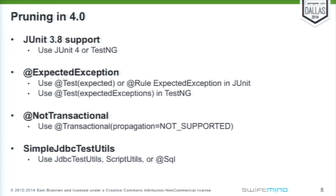Another annotation we had specific to tests was NotTransactional — kind of the opposite of what you normally use with transactional — and we got rid of that. The replacement, if you still need that feature in a test class that has transactional test methods, is to set the propagation level to NOT_SUPPORTED. That will mean this test method does not run in a transaction. SimpleJdbcTestUtils — if you find code using that, just switch to JdbcTestUtils. Or you could go with support via ScriptUtils or what we'll talk about later with @SQL for declarative SQL execution.